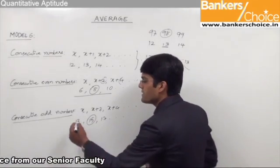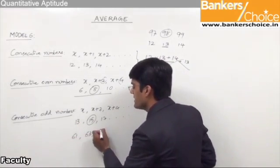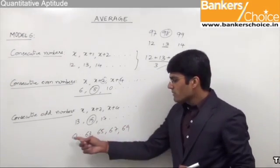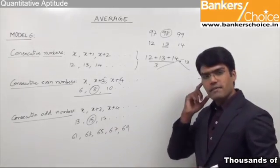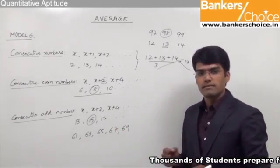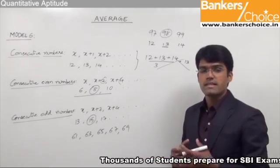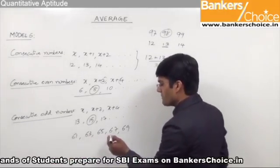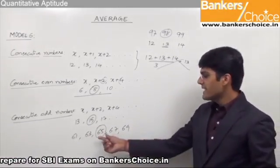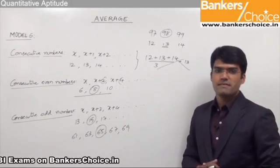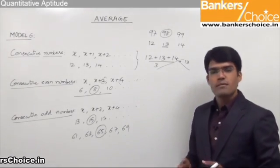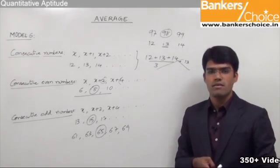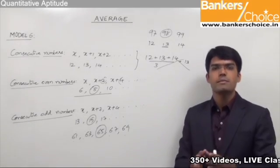Similarly let us say we have consecutive odd numbers 61, 63, 65, 67 and 69. To find out the average of these five consecutive numbers we need not take the sum divided by 5. As discussed, for consecutive numbers the average should always be the middle number. Here out of the five numbers the middle number is 65, so we can directly say that the average is 65. Remember that for any type of consecutive numbers — normal, even, or odd — the average will always be the middle number.